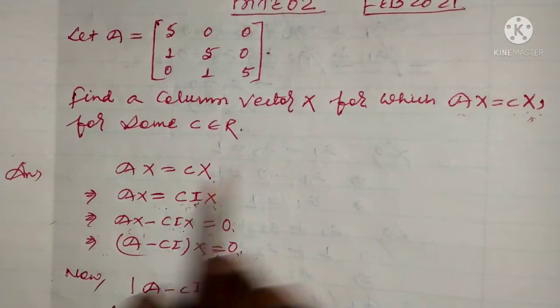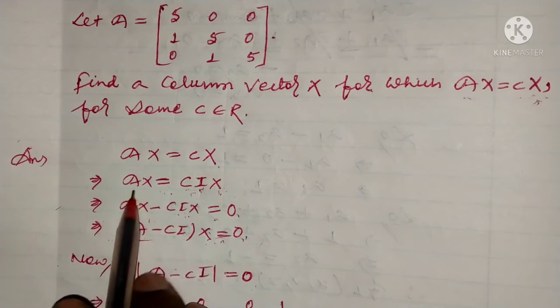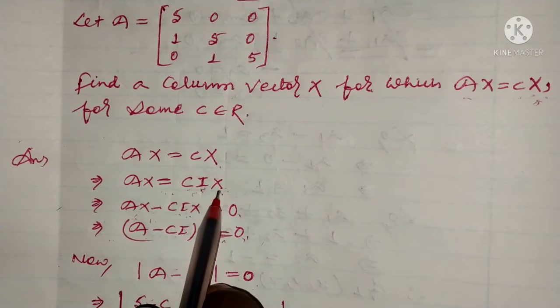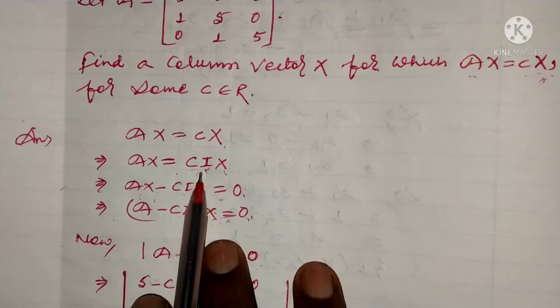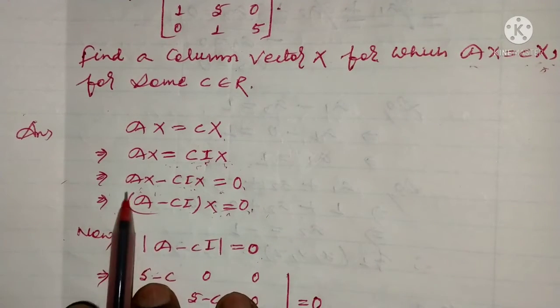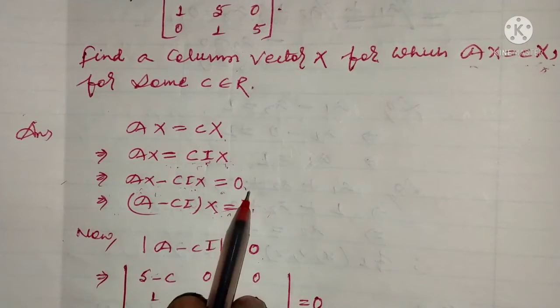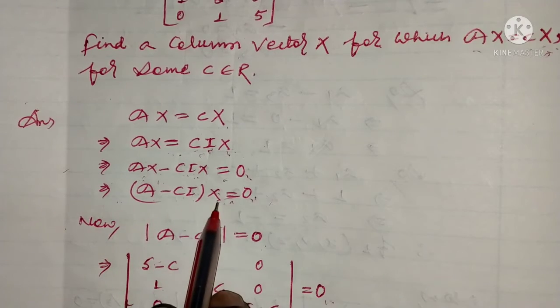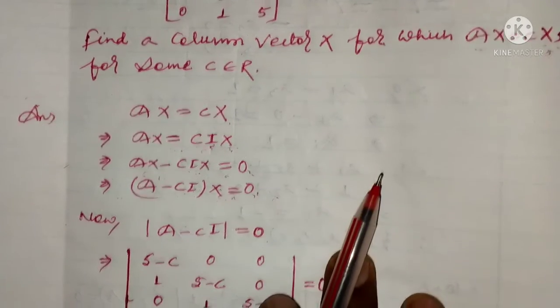So it implies that AX is equal to cX. It implies that AX minus cX, which is cIX where I is the identity matrix, equals zero. It implies that (A - cI)X is equal to zero.